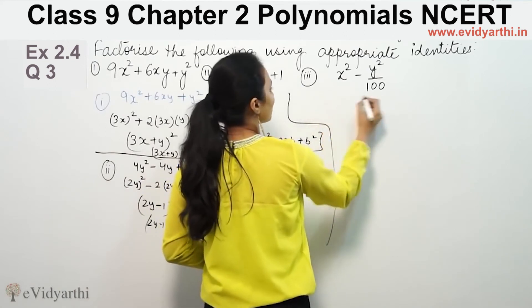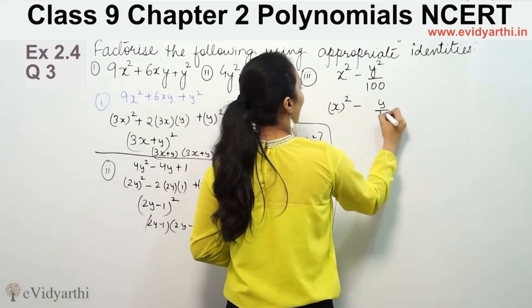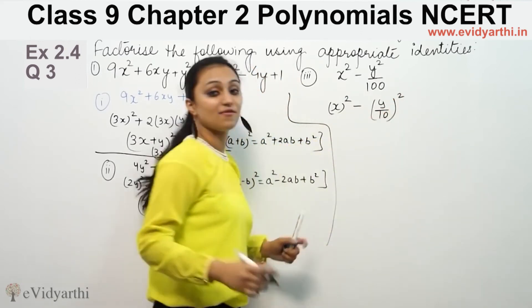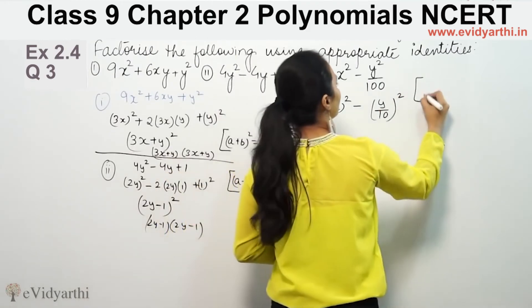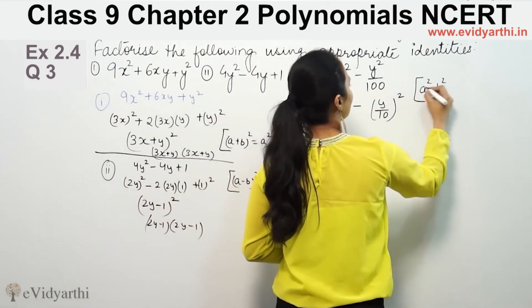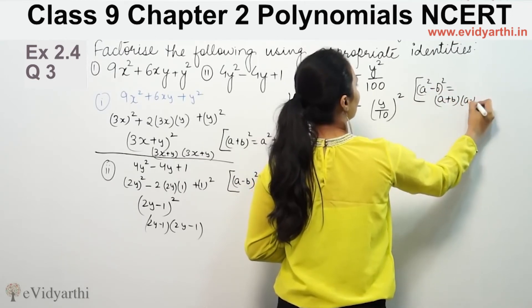Now, in the third part, x² minus y²/100. We can write x² minus (y/10)². y/10 squared is y²/100. So here identity is a² - b².